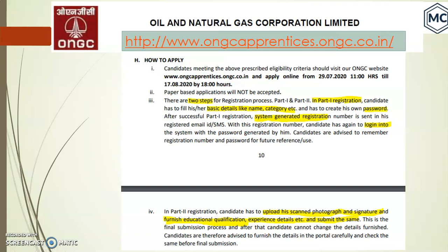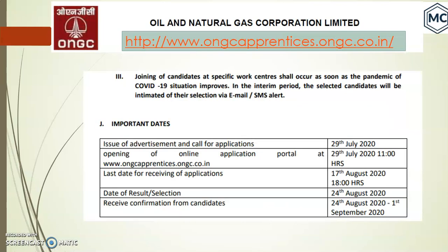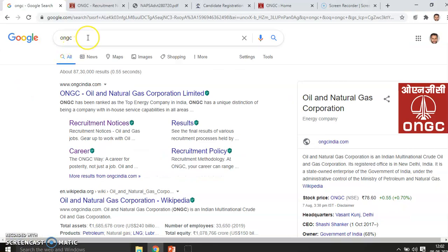After registration on the apprenticeship portal, you visit the ONGC application website. The application process has two parts: Part one registration asks for your basic details and requires you to create a password. In part two registration, you upload your photograph, signature, basic educational qualifications, and experience details — though experience is not necessary for this particular application.